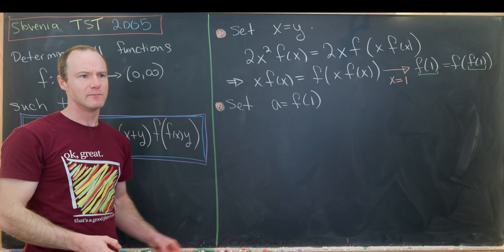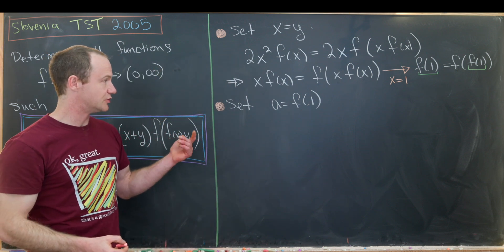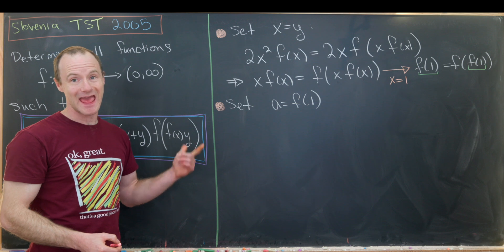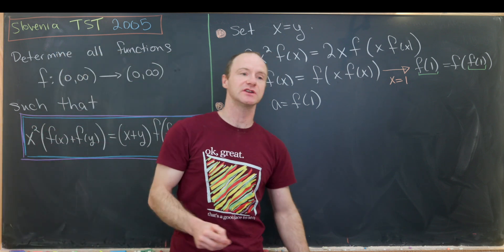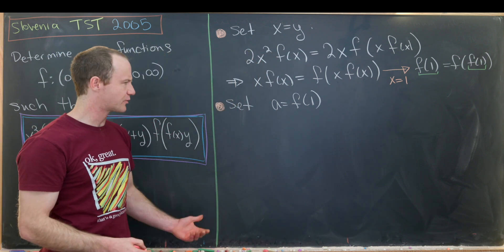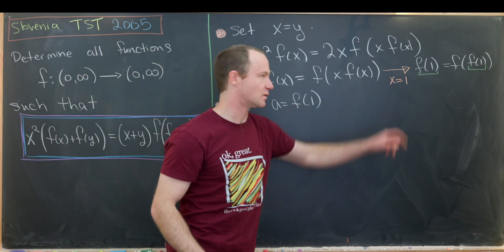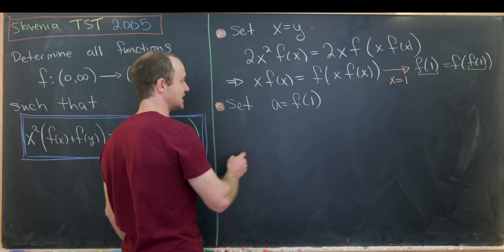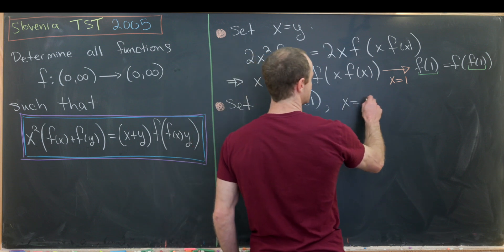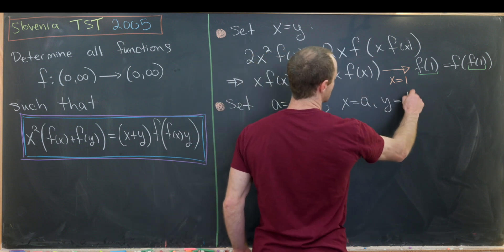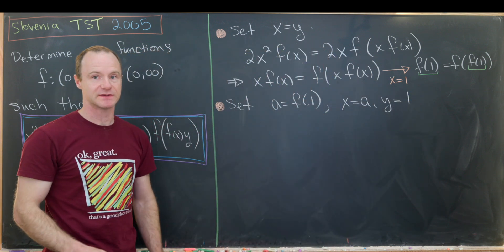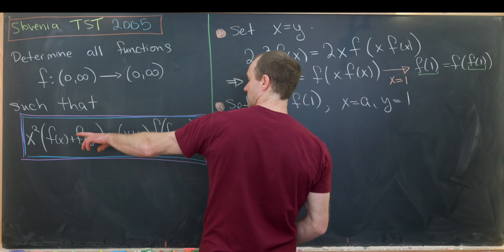Then that motivates us to put one and a into this functional equation. Generally, you'd probably like to try this both ways, but since we just put x equals one in here, we'll set x equal to a and then we'll set y equal to one and see what happens. Let's do it over here.